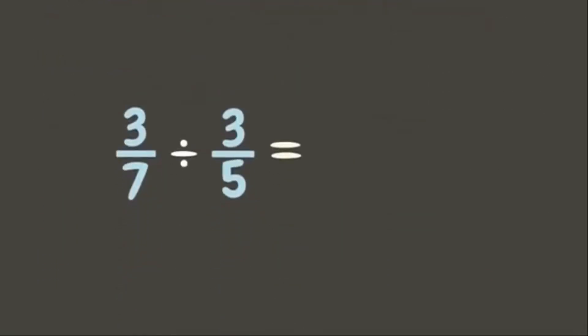Let's try three-sevenths divided by three-fifths. What is our first step? We need to get the reciprocal of the divisor three-fifths. Let us switch the numerator and the denominator.